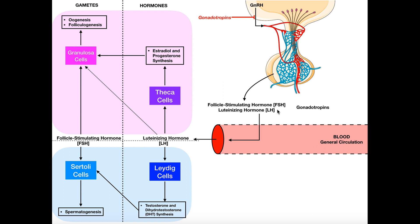With FSH and LH traveling in the blood, we'll discuss males first since they're a bit simpler. Luteinizing hormone, or LH, specifically acts on the Leydig cells in males. Leydig cells are specialized for generating androgens and are located in the testes. When LH acts on the Leydig cells, they respond by increasing the synthesis of two androgens — testosterone and dihydrotestosterone, or DHT. The term androgen uses the prefix 'andro,' meaning male, so an androgen is a hormone that causes masculinizing effects.